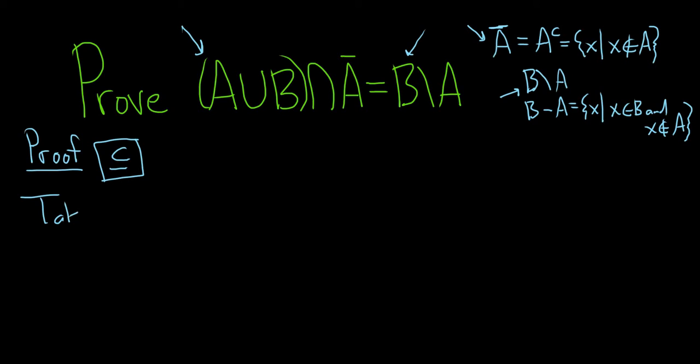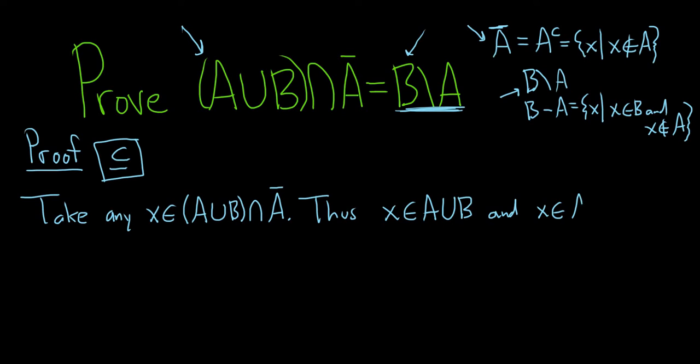So take any element in this set here on the left. So it'll be (A∪B)∩Ā. Okay, so x is in this set. We have to show that it's in B but not in A. Alright, I guess now what we can do is use the definition of intersection. So thus, x is in A union B, and intersection means it's in both. So you put an 'and'. So both of these statements are true. So it's in the union and it's in the complement of A.